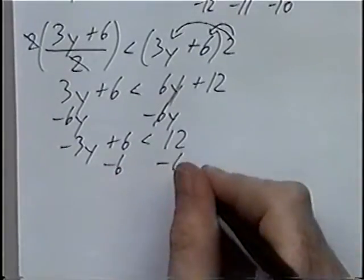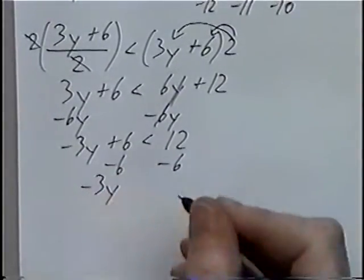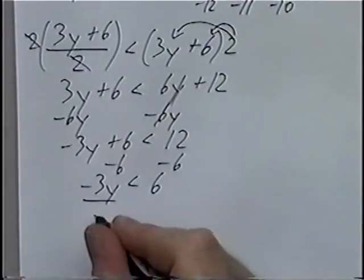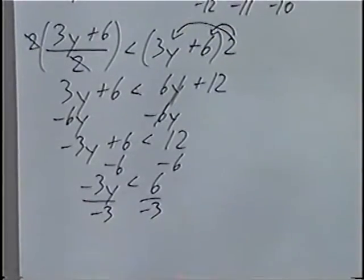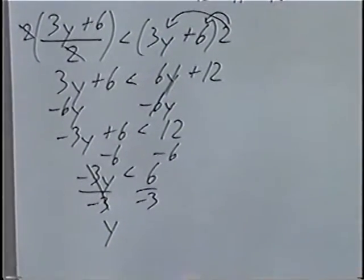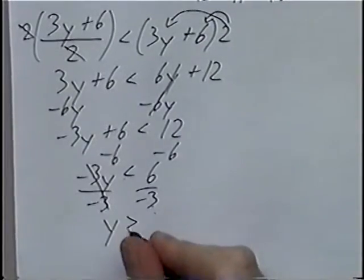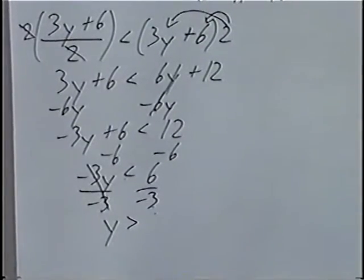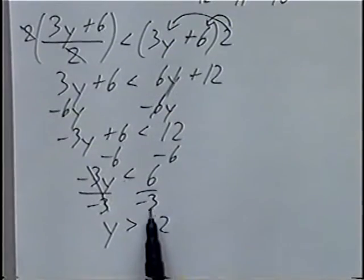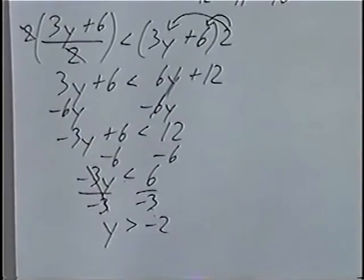Subtracting 6 on both sides gives negative 3y is less than 6. The last step is to divide by negative 3. When you divide by a negative number, the inequality switches direction. 6 divided by negative 3 is negative 2. So our answer is y is greater than negative 2.